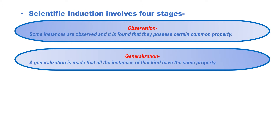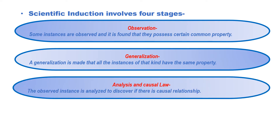Then the second stage is generalization. On the basis of the observation of a few instances that possess a certain common property, they generalize about all the instances of that kind. So a generalization is made that all instances of that kind have the same property. After that, they analyze and find the causal law.